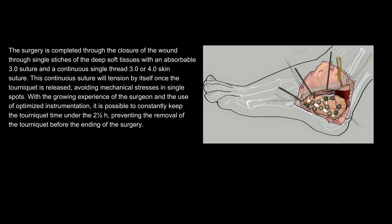The surgery is completed through closure of the wound with single stitches of the deep soft tissues using an absorbable 3.0 suture, and a continuous single-thread 3.0 or 4.0 skin suture. This continuous suture will tension by itself once the tourniquet is released, avoiding mechanical stresses in single spots.